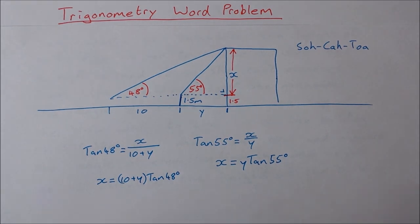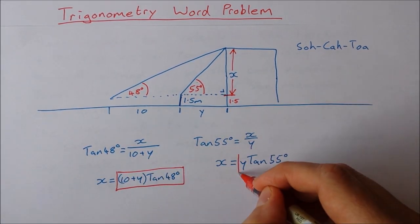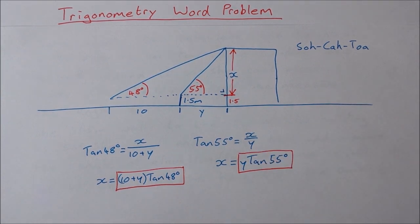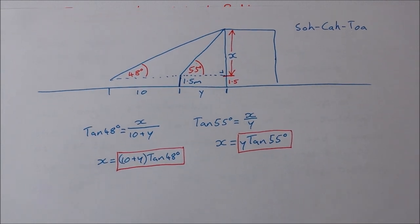And now hopefully you can see that I have two things here that are both equal to x. I have 10 plus y tan of 48 and I have y tan of 55. Both of these are equal to x. So that means both of these are equal to each other.